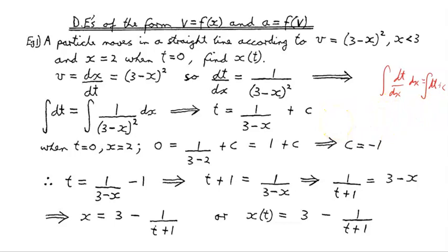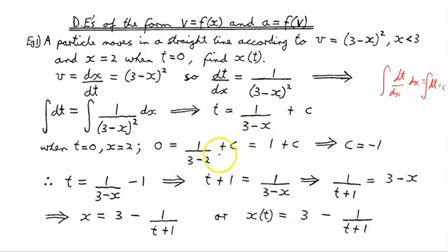That leaves us with t equals 1 on (3 minus x) plus c. We know that when t equals 0, x equals 2, so substituting: 0 equals 1 on (3 minus 2) plus c, which is 1 on 1 plus c, equals 1 plus c equals 0. Therefore c must be minus 1.